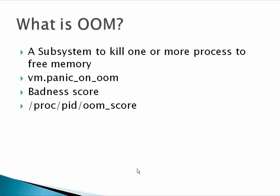Before digging into what is the out of memory case and how it happens, let's look at the basic definition. Let's say I have started a new process and it will ask for some memory from the kernel, and let's say the kernel has all the memory filled up. And whenever this process asks for some memory, the kernel tries to reclaim some of the memory. But if the kernel is not able to reclaim sufficient amount because all the memory is currently being used by the system.